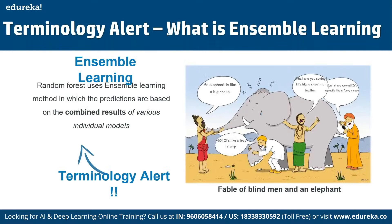Random forest uses the ensemble learning method, where predictions are based on the combined results of multiple individual models. This is like the analogy of blind men and an elephant — one says it's like a big snake, another says it's like a tree's trunk, another says it's like a shade of leather, and yet another says it's like a furry mouse. All are different inputs that are combined to get the final result.